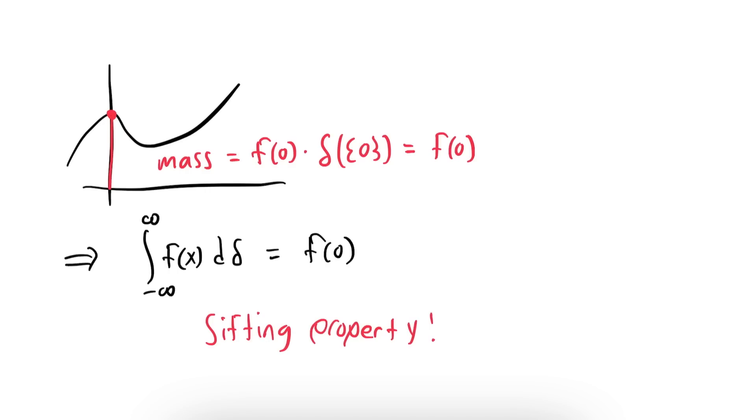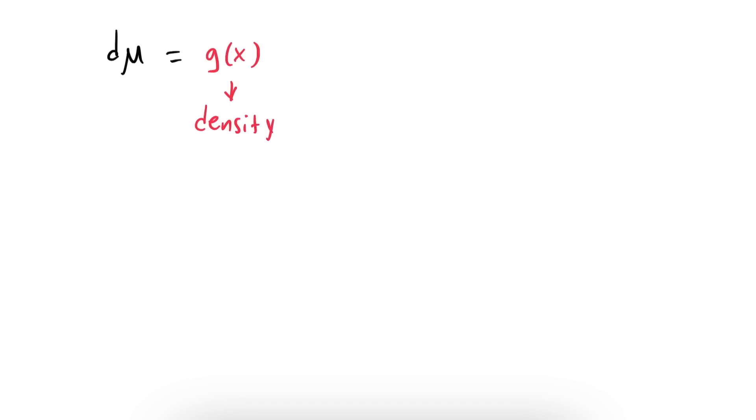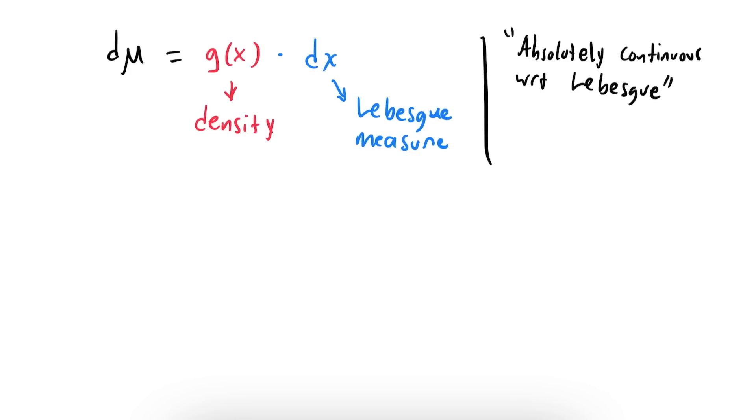So this somewhat explains the sifting property. But why do we think of the Dirac delta as a function that's infinite at 0? The answer lies in the fact that some measures can be written as a density function times the usual Lebesgue measure. Measures that can be written this way are called absolutely continuous with respect to the Lebesgue measure.